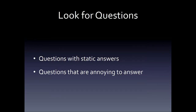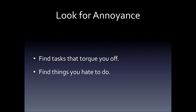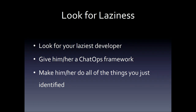But how can we do this for groups outside of operations? Look for questions — the static questions that people are asking again and again. Find things that are really annoying to answer. Also look for repetitive tasks. If there's something that just really annoys you and you don't want to do it — it's just degrading work — put it into a chat bot. Find some way to automate it and make you happy. Look for the annoyances. Find the things that are going to bother you, the things you don't want to do, and automate those. But the last thing I want to leave you with: look for the laziness. Find the laziest developer you know, give them the chat ops framework, and make them answer all those questions and do those annoying tasks. You will get your chat ops pushed out to the rest of the company faster than you can possibly imagine.